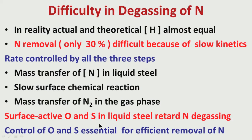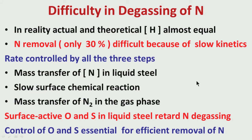Nitrogen removal is relatively slow. Moreover, if oxygen and sulfur are present in liquid steel, they are surface active and can create problems in denitrogenation. At the surface of the liquid steel and gas, there is a competition between nitrogen and surface active elements like oxygen and sulfur. If oxygen and sulfur are present in higher amounts in liquid steel, they will accumulate more at the interface of liquid steel and gas, and the probability of nitrogen occupying those sites will be less. So the surface chemical reaction will be slow. Therefore, control of oxygen and sulfur is essential in liquid steel before we can get good removal of nitrogen.